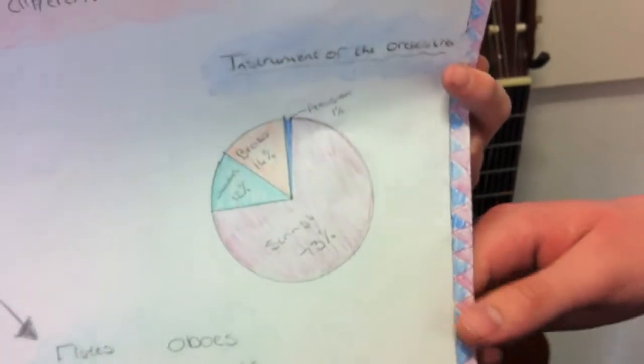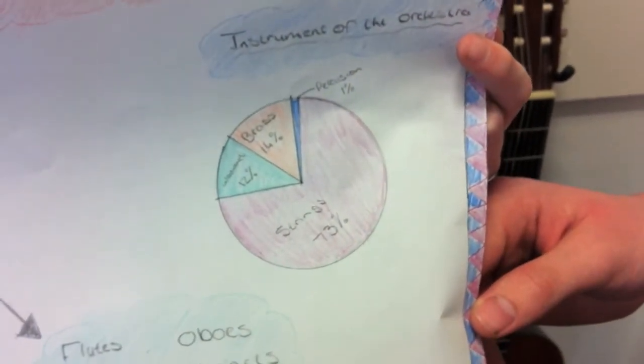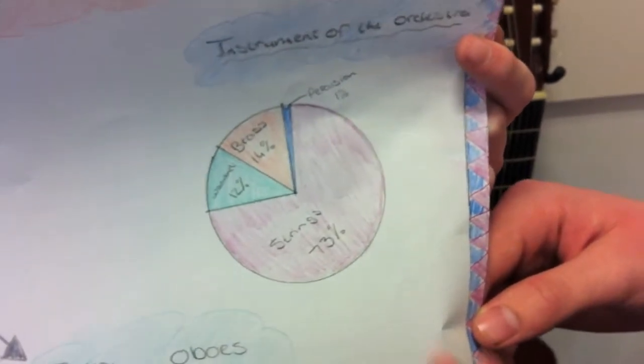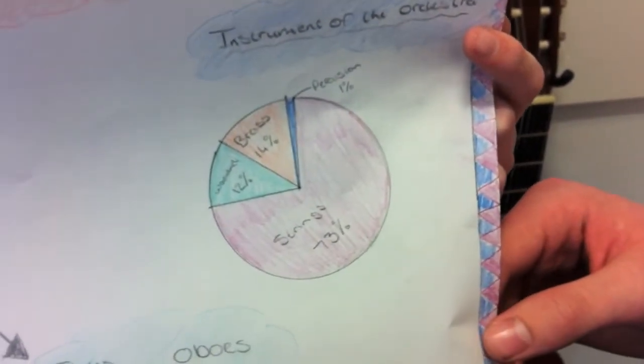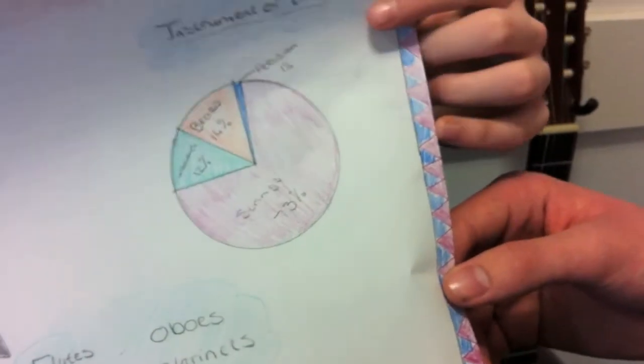We've done pie charts, and this one shows that strings take up 73%, that's nearly three quarters, and woodwind, brass, and percussion take up much smaller percentages, just 12%, 14%, and 1%.